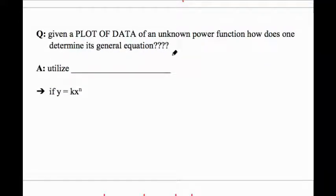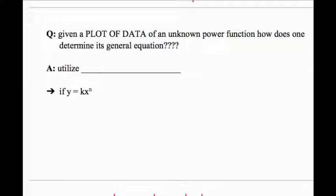The general question is: given a plot of data—I haven't shown you any data yet, I've given you the results of the data, the graphs—of an unknown power function, how does one determine a general equation? We're going to utilize logarithms. Let's take our generic y = kx^n. What we want to do is essentially solve for n, and to do that we're going to take the logarithm of both sides.